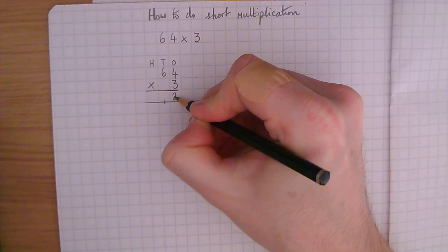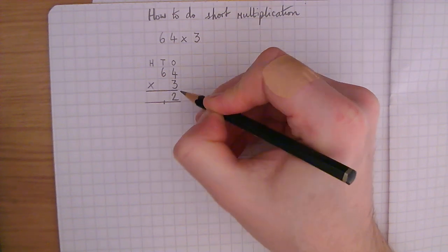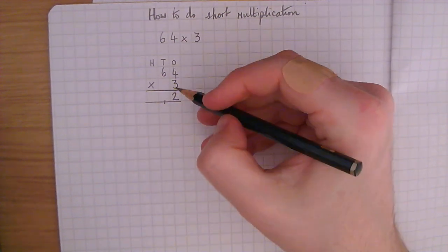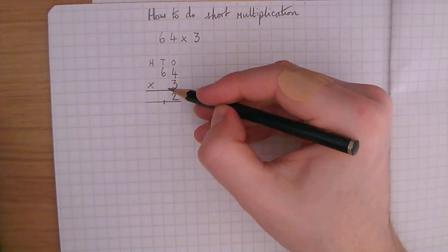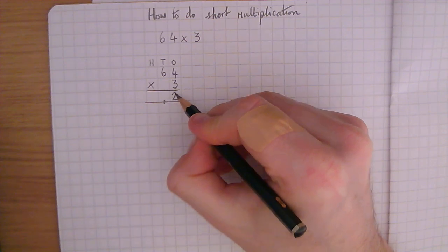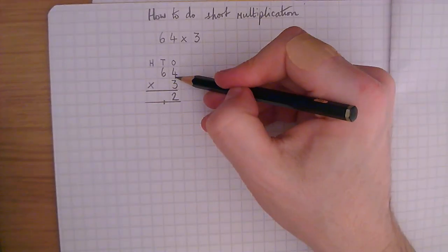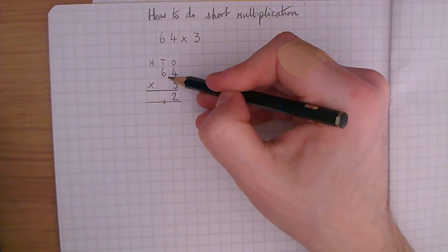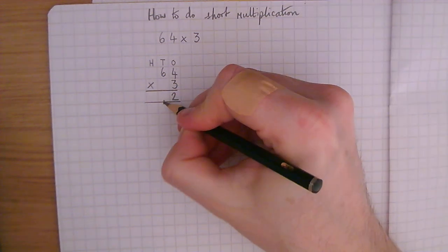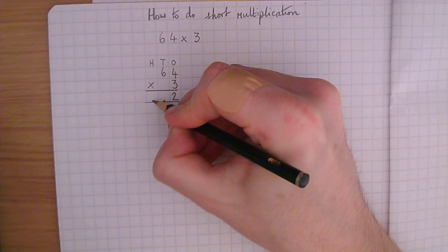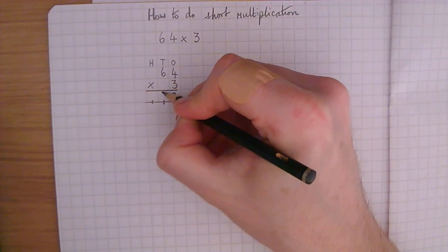When we do these methods, we only have one digit in the square. So the 1 goes here in the next column, on that line there, and the 2 goes there. Once we've done 3 times 4, we do 3 times 6. 3 times 6 is 18. And we've got to remember to add this 1, which will make 19.